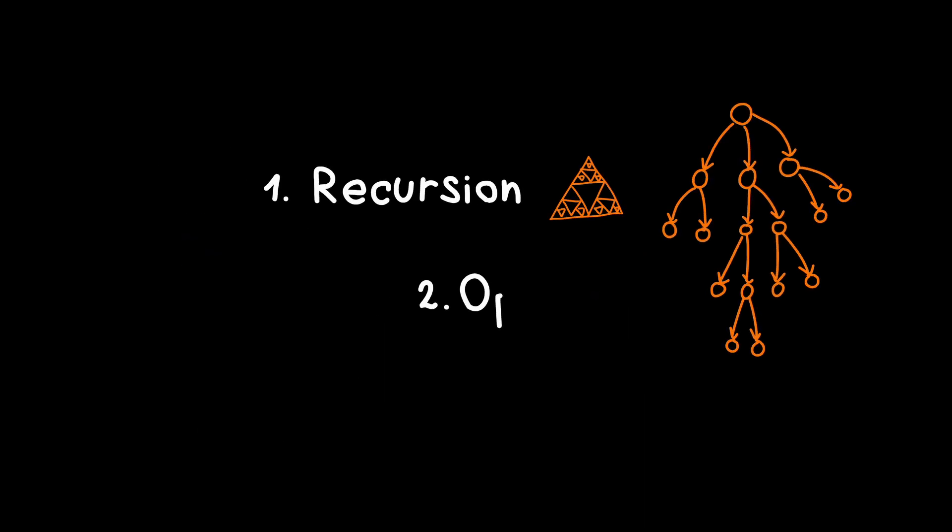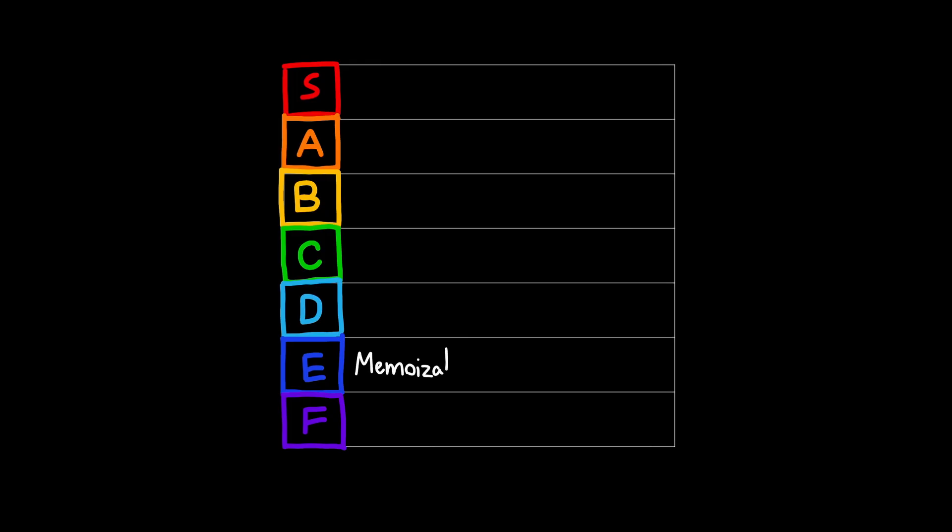This is the essence of dynamic programming. We come up with a recursive solution and optimize it by making sure we don't calculate things twice. But memoization is not the sharpest tool that DP offers. There is a reason why it is also called lazy DP. So let's not waste our time and get to the real stuff.